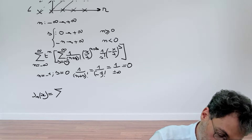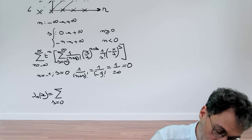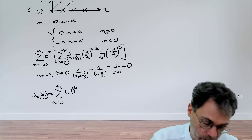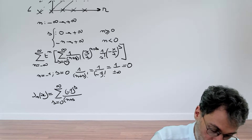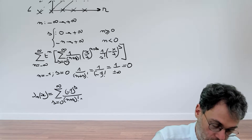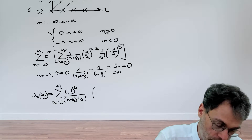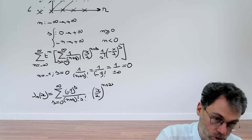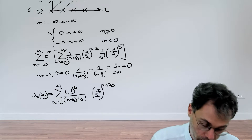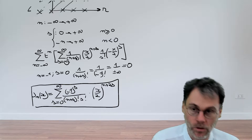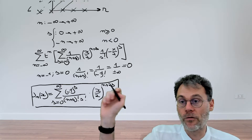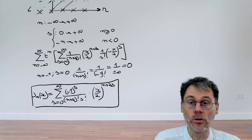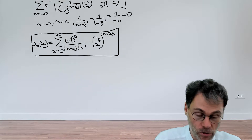After this simplification, we can identify the series expansion of the Bessel function of the first kind of order n as: J_n(x) = sum over s from 0 to infinity of (minus 1)^s divided by ((n+s)! times s!) times (x over 2) to the power of (n + 2s). Starting from the generating function definition, we have derived an explicit series expansion that can be used to numerically calculate the Bessel functions.